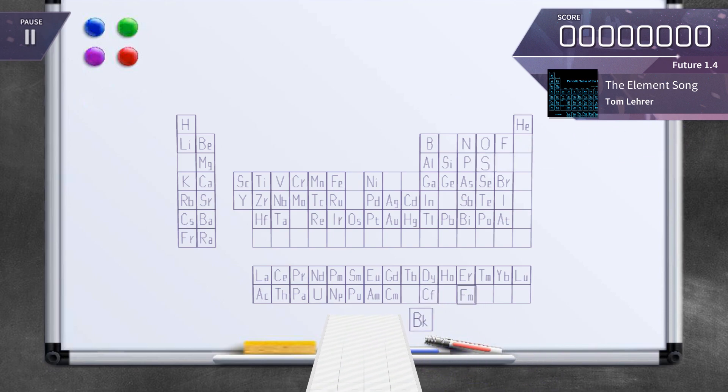There's sulfur, californium, and fermium, berkelium, and also mendelevium, einsteinium, and nobelium, and argon, krypton, radon, xenon, zinc, and rhodium, and chlorine, carbon, cobalt, copper, tungsten, tin, and sodium.